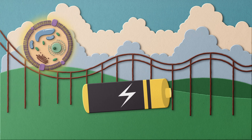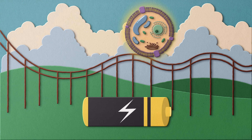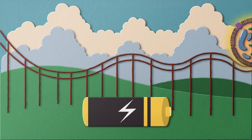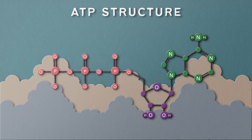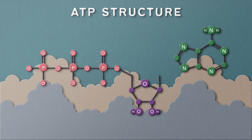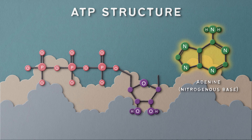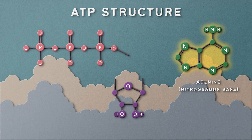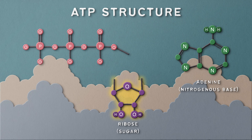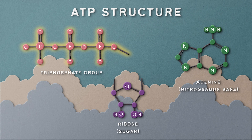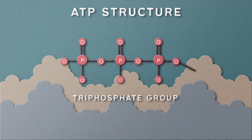ATP is like the batteries for your roller coaster, ensuring everything runs smoothly. ATP is composed of three main parts: adenine, a nitrogenous base; ribose, a sugar; and three phosphate groups. The 'tri' in triphosphate means three phosphates. These phosphates are the key to ATP's ability to store and transfer energy.